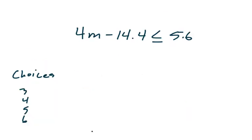Now let's try one with a little bit more in it. Once again, we have our choices over here, 3, 4, 5, and 6. Let's see what happens. When we do 3 in place of m, we get 4 times 3 minus 14.4. And we want to see if that is going to be less than or equal to 5.6.